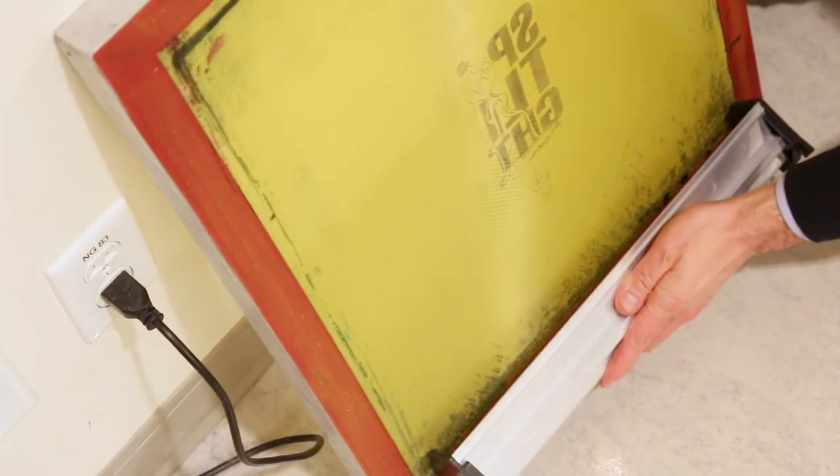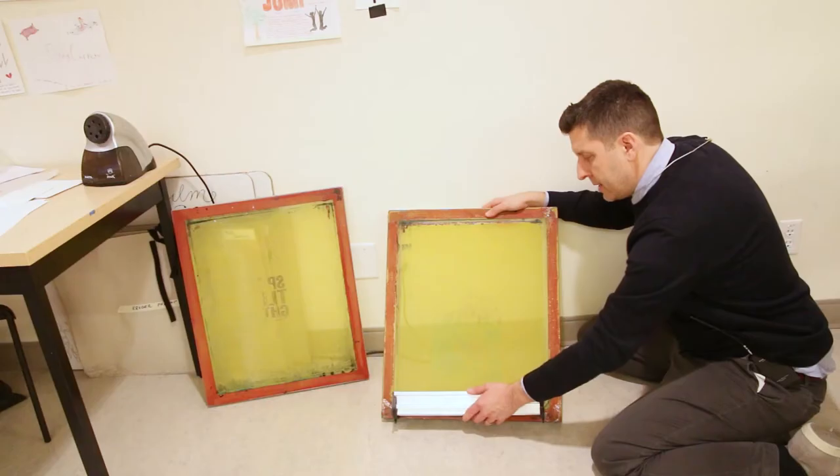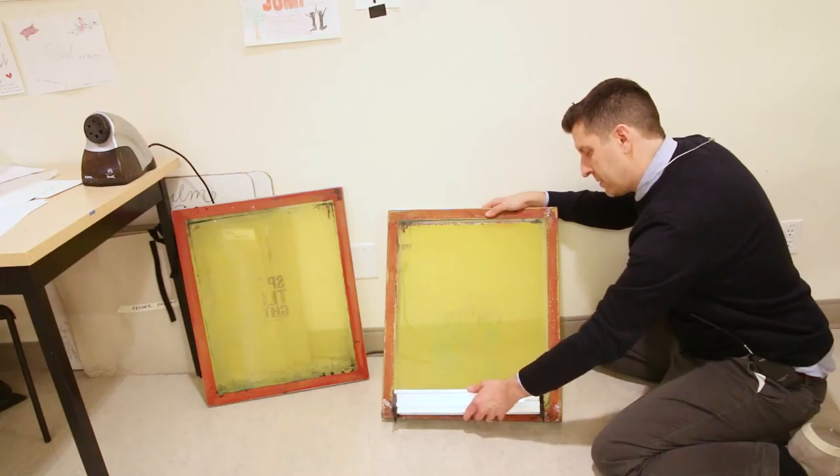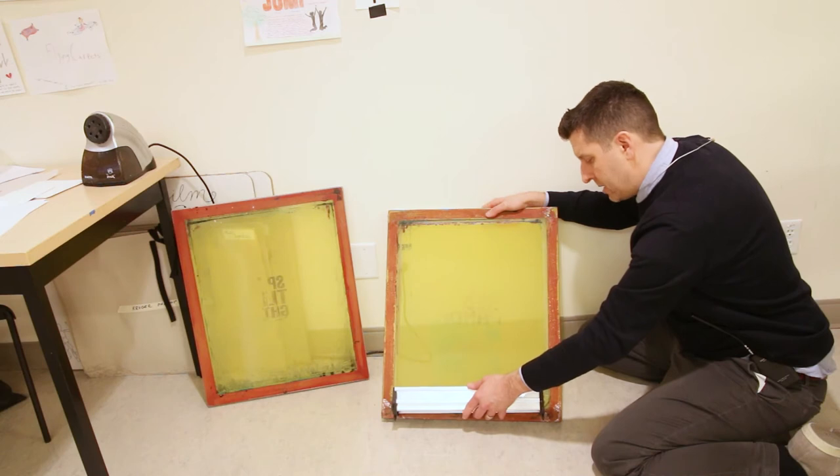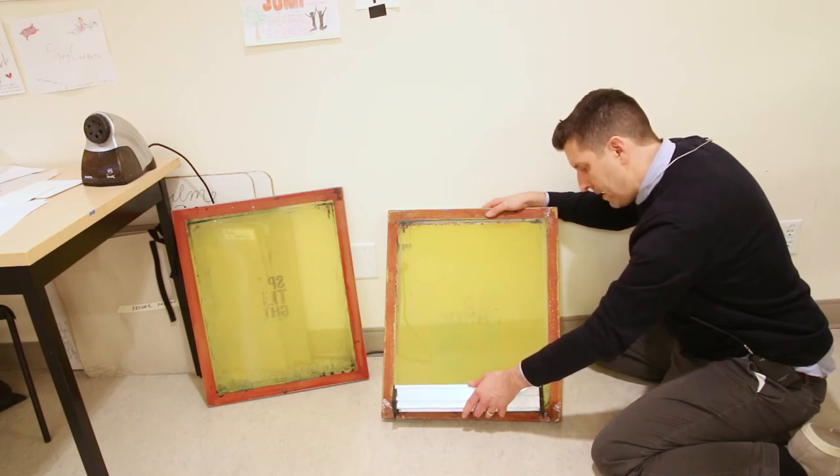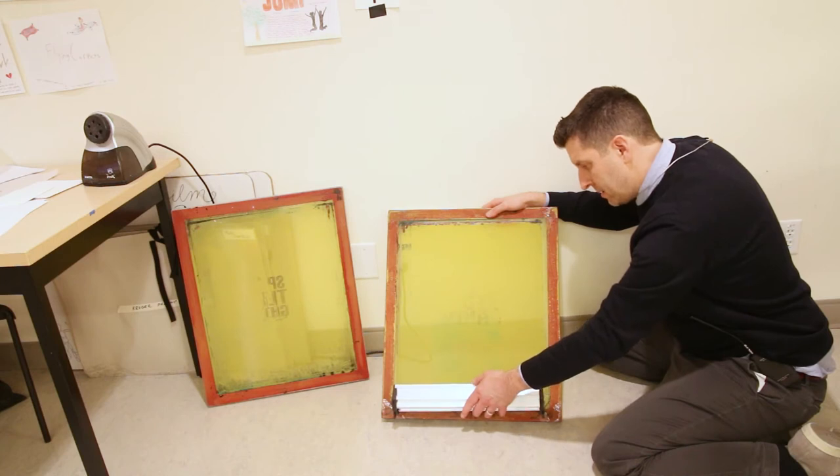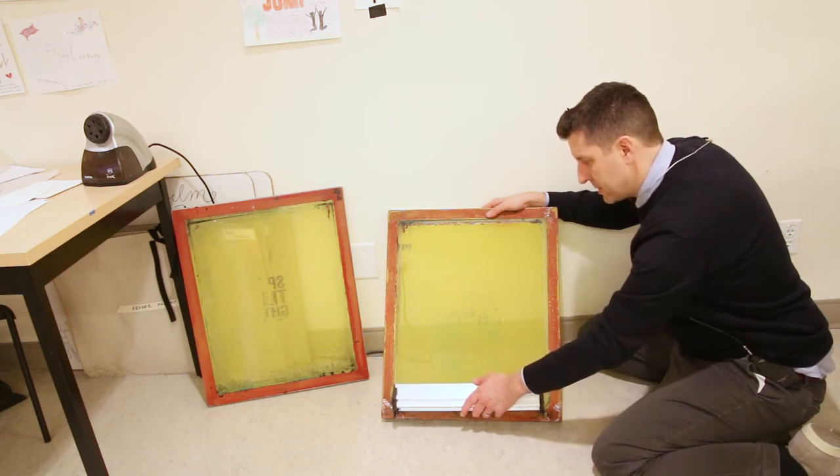So I'm going to tilt my scoop coater until the emulsion starts coming out onto the screen and from there I'm just going to make sure that the emulsion completely tips down so that it's all on the screen but it's still being held in by the scoop coater itself.